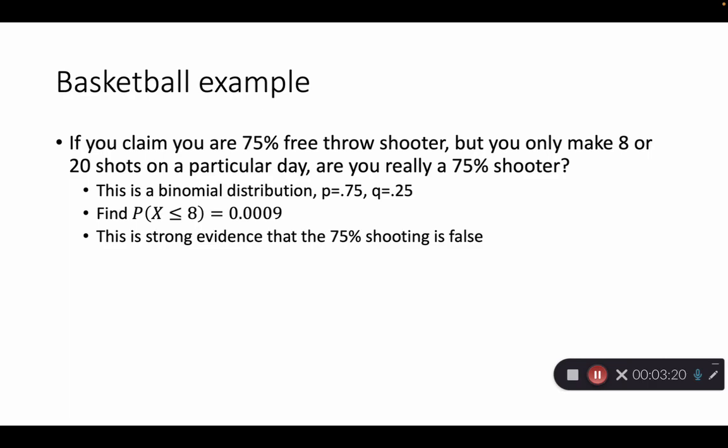And I worked it out several times myself, different ways to make sure that that is the correct value. But that's the probability of getting eight or fewer shots, which means we're talking about nine ten thousandths, or nine out of 10,000 scenarios where that occurs. So is this enough evidence for us to say, well, this just isn't likely. You're not going to be a 75% free throw shooter and make eight out of 20. It's just that's too low of a probability.